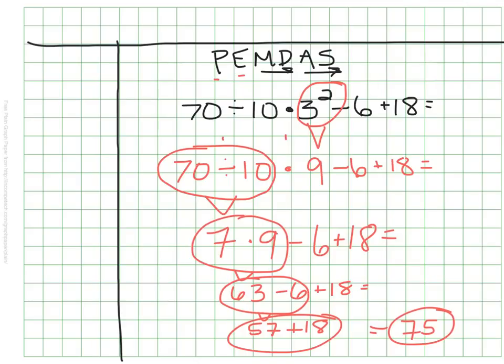That number sentence was really long, and we could have made a mistake anywhere throughout that, but because I knew my order of operations and I went through bit by bit, I was able to come to my correct answer.